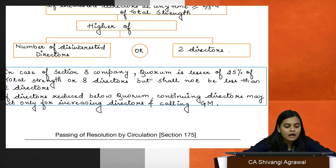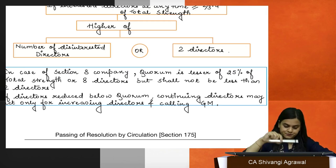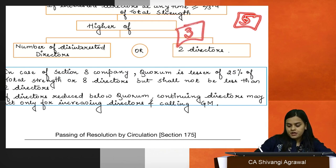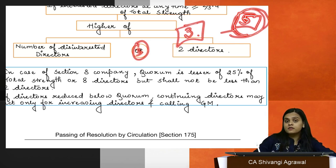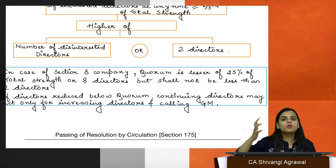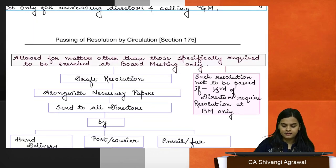For Section 8 companies, quorum is 25% of total strength or 8 directors, whichever is lower, but in no case less than 2. If articles require a quorum higher than the available number of directors — for example if directors have died — the remaining directors may still hold a board meeting with fewer than quorum for two limited purposes only: to increase the number of directors or to call a general meeting.